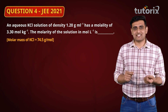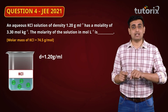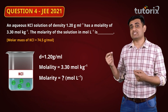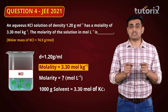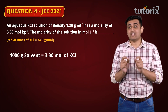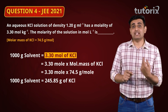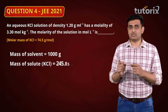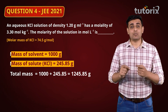The next question gives an aqueous solution of KCl with a density of 1.20 g/mL and molality of 3.30 moles per kg. We have to calculate the molarity of the same solution in moles per litre. From the molality, 1000 grams of solvent contains 3.3 moles of KCl. Converting to grams: 3.3 moles × molecular mass of KCl = 245.85 grams of KCl. So the total mass of the solution = 1000 g (solvent) + 245.85 g (solute) = 1245.85 grams.